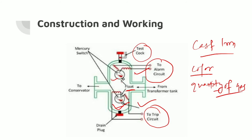There is a provision for operating the trip and alarm mechanism manually — you can activate the trip and alarm circuit manually. To pump air through the pet cock and operate the relay is one of the simple methods for testing the working of the relay. You can manually use the test cock, provide the gas, and see if the alarm circuit and trip circuit are working.